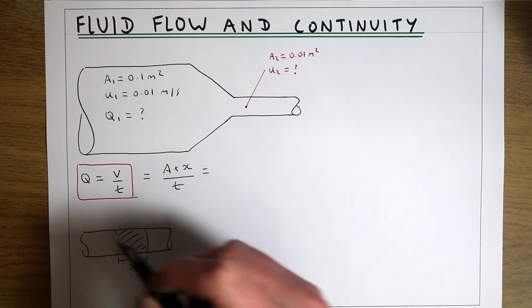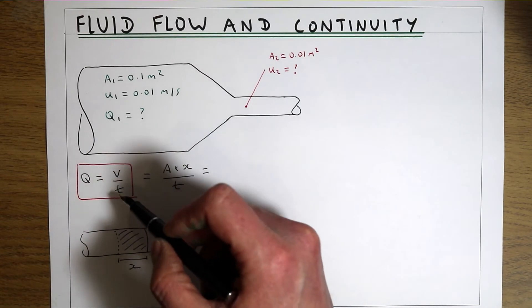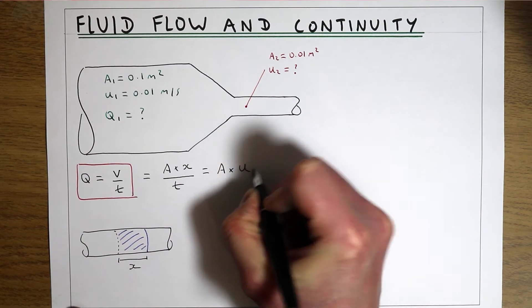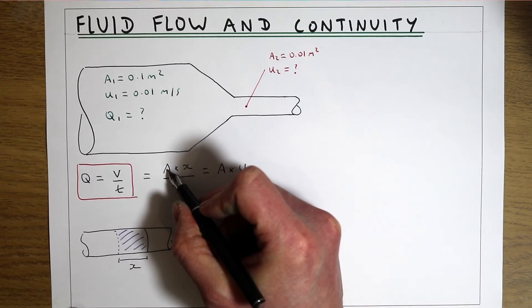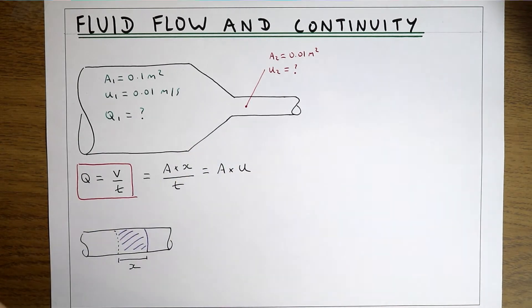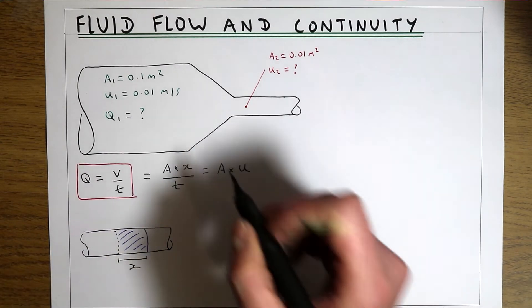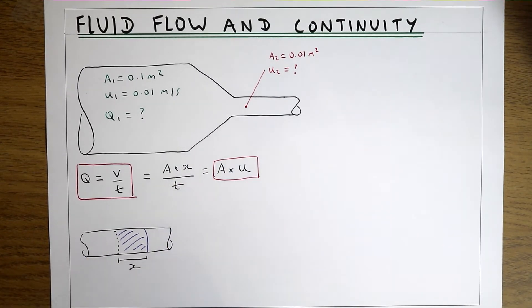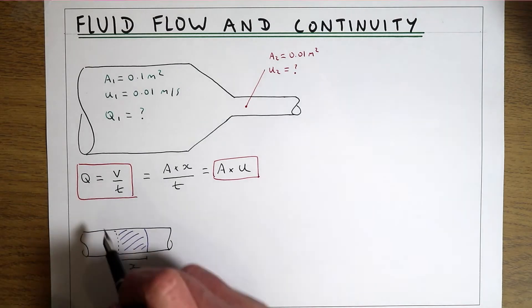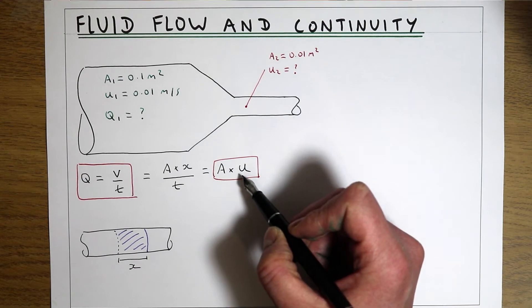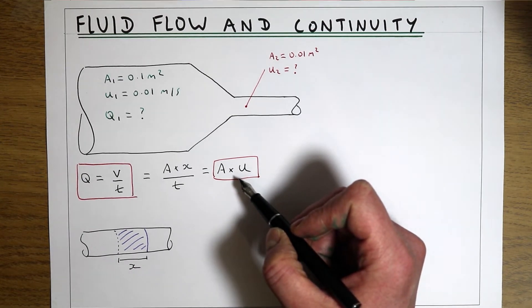Which tells us that the discharge, as well as being volume per unit time, is also area times velocity, because we've got the area term there and then x over t is giving us a longitudinal velocity. So we can get the flow rate from the area of the flow times by the velocity of the flow.